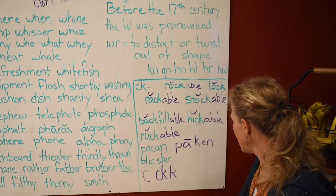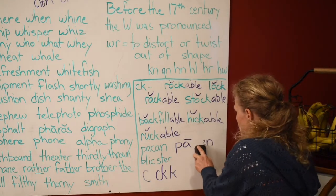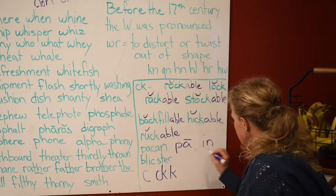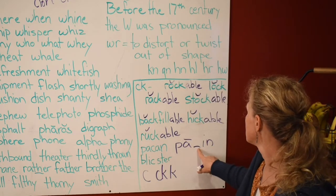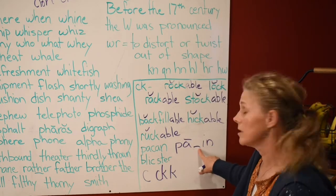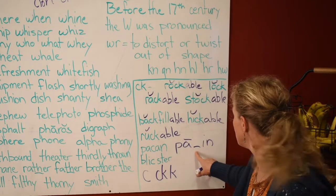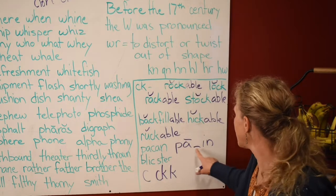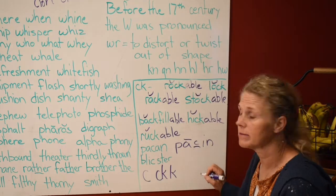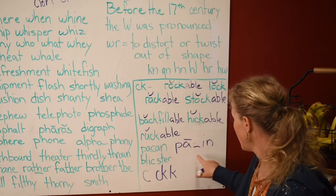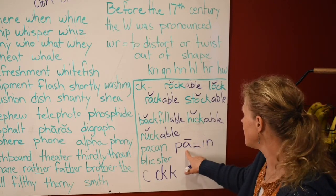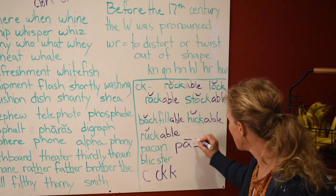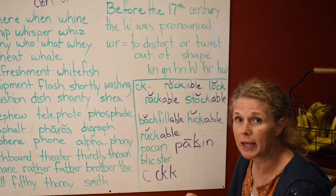Let's switch the vowel to I. Can it fit with a C? No, because I is an E, I, or Y — it would say 'pasin.' Can we put a CK in there? No, because that's a long vowel. So we know it has to be a K.